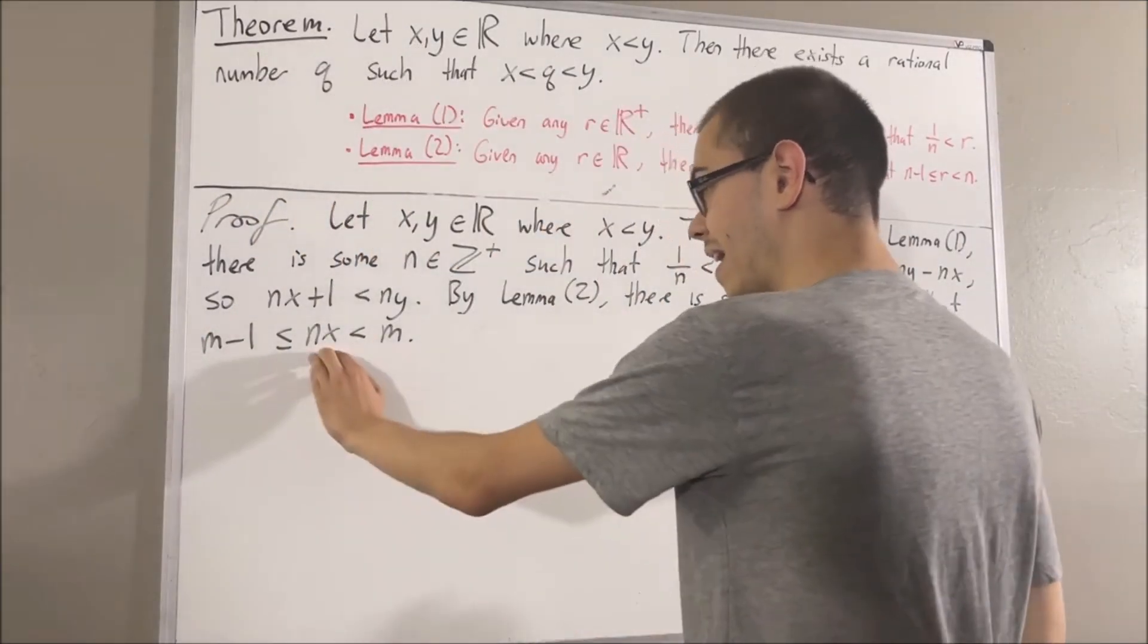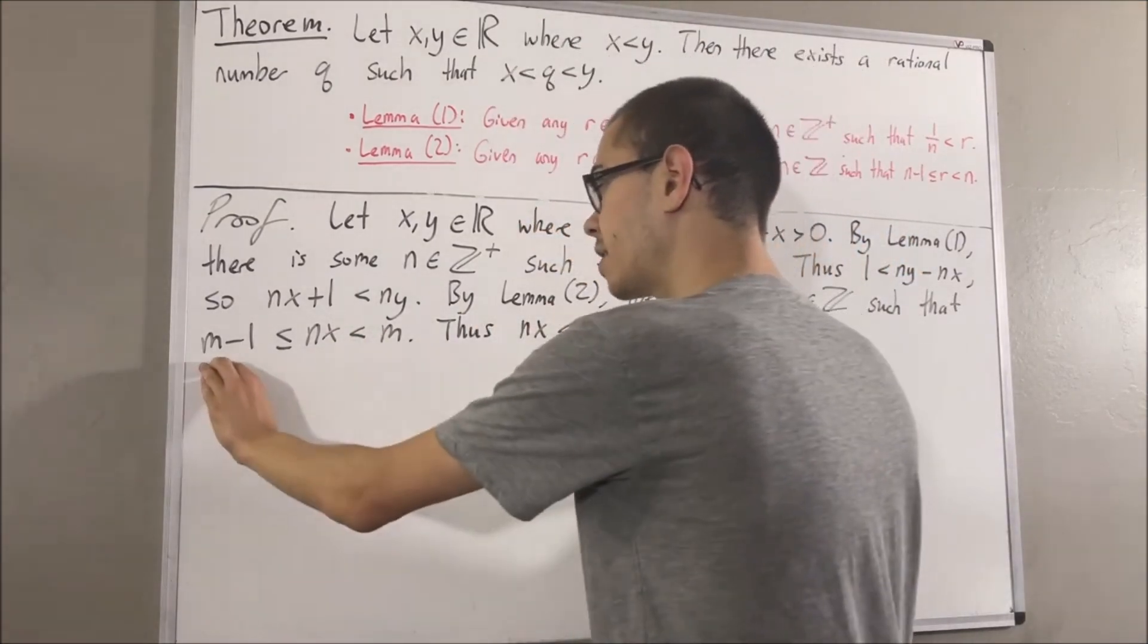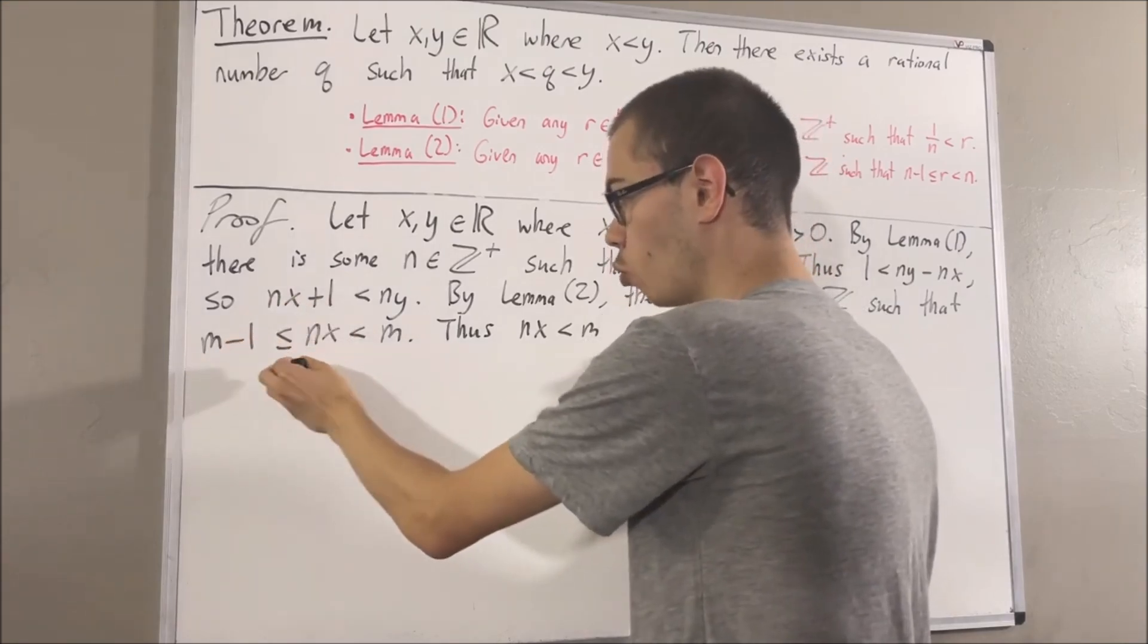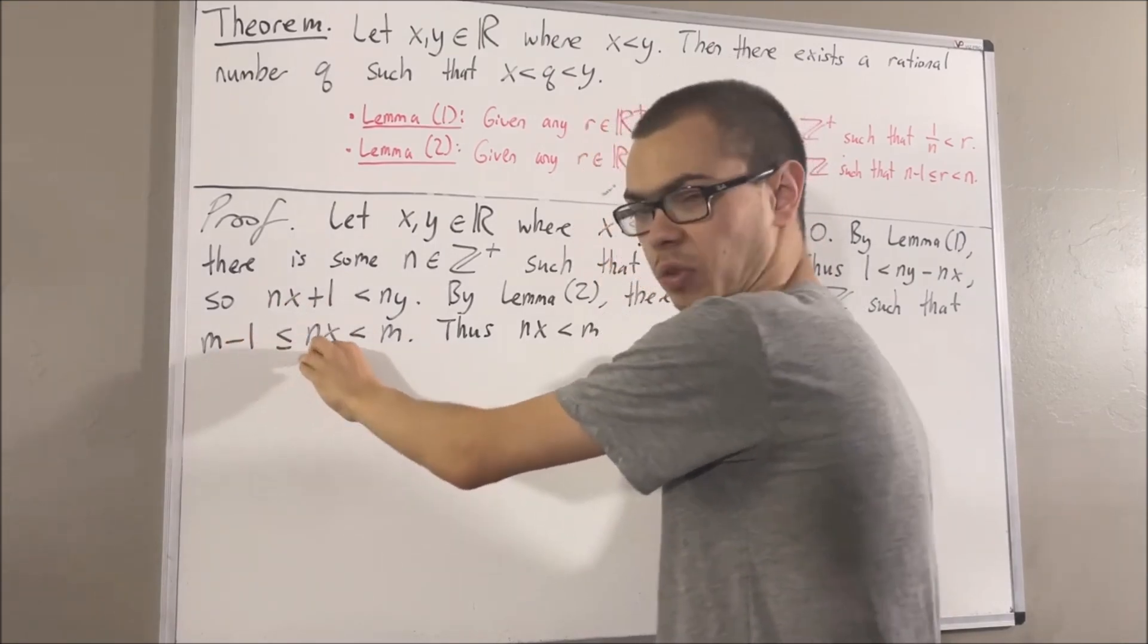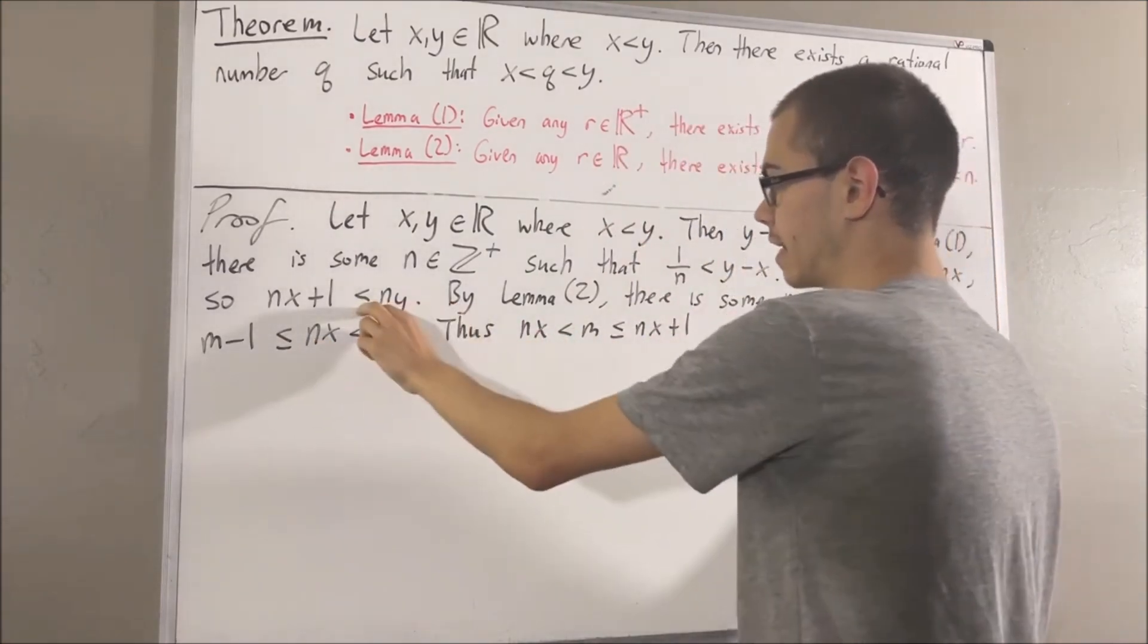And then we see that nx is less than m. And if we take this portion of the inequality and add 1 on both sides, we get that m is less than or equal to nx plus 1. And we know that nx plus 1 is less than ny.